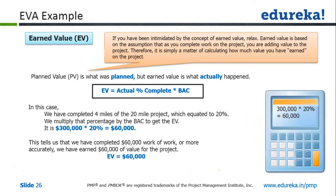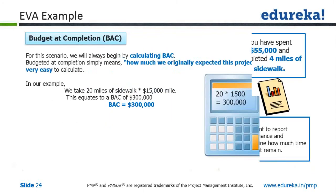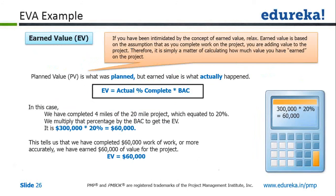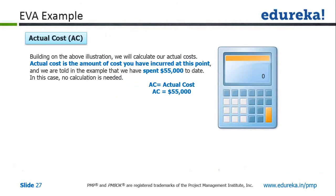Then we go to the next one — earned value. Earned value is how much work we have completed in actual. We have completed 20% of the work. So 20% of the total work — if the total work is worth $300,000 — 20% of that will be $60,000. So this gives us the value for our second element, that is earned value: the work done so far is worth $60,000. And actual cost is given to us, that is $55,000.